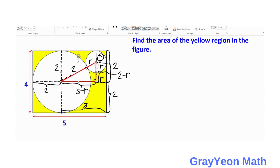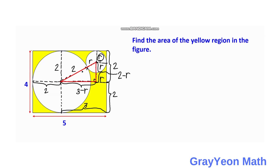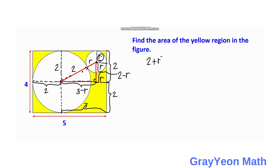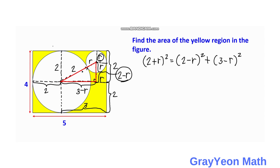As you can see, I have highlighted the red right triangle. For this right triangle, the hypotenuse is 2 plus R. Squared, this equals the shorter leg which is 2 minus R, squared, plus 3 minus R, squared. We are using the Pythagorean theorem because this is a right triangle, to solve for R.